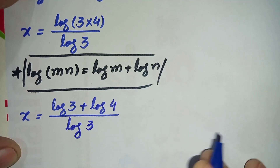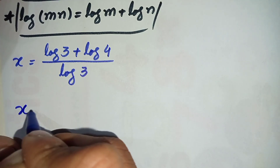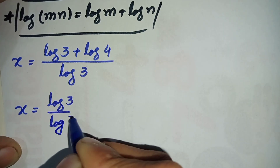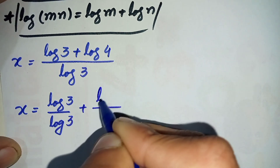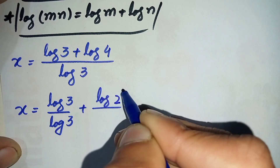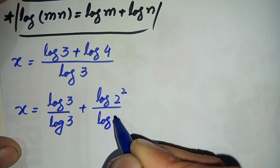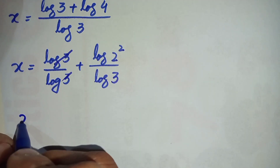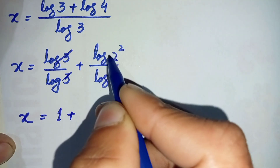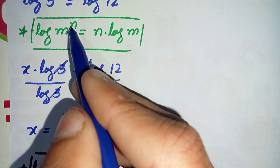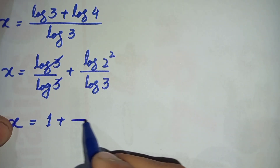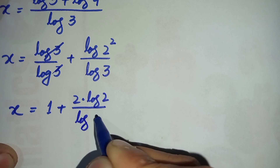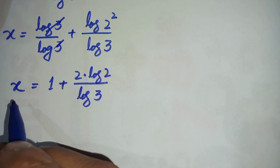We can further write the right hand side as x is equal to log of 3 divided by log of 3, plus log of 4 written as 2 raised to power 2, divided by log of 3. This log of 3 and log of 3 cancel, leaving 1. So x is equal to 1 plus, and using the logarithmic power rule, we shift the power to the front: 2 times log of 2 divided by log of 3.